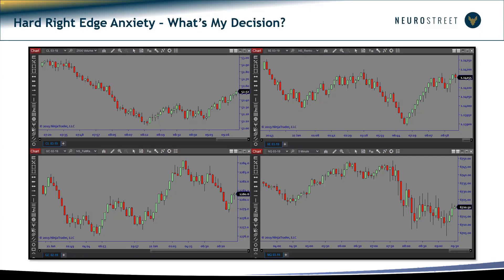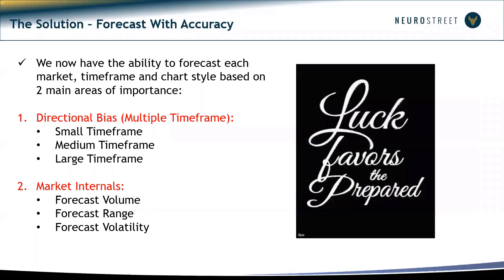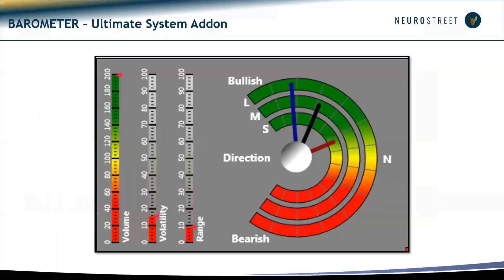We wanted a way to quantify market sentiment and internal directional factors. We took two of the most important parts of trading — sentiment of direction and market internals — and brought them together. Directional sentiment depends on many factors: small, medium, and large time frames; volume; range; volatility; and speed of the market. We merged it all into what we call the barometer — one custom graphics interface designed to show what small, medium, and big time frames are doing, plus a gauge of volume, volatility, and range.